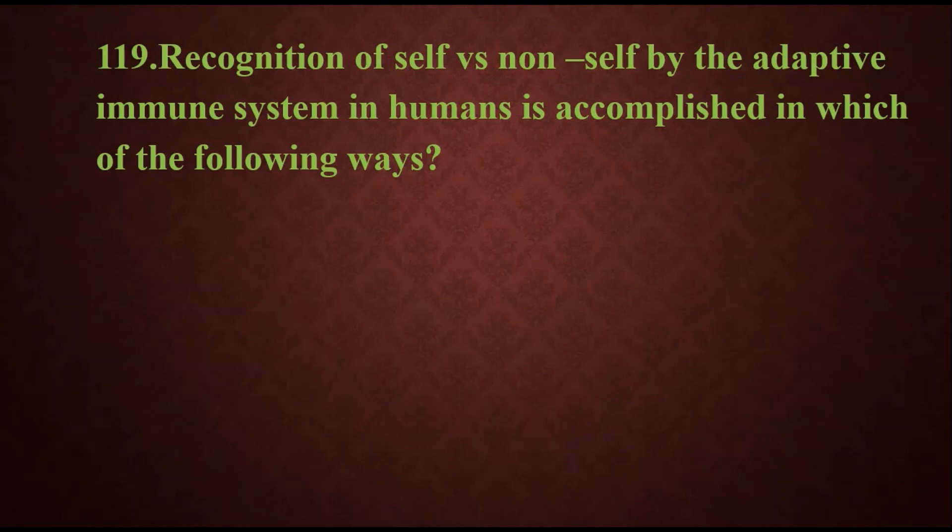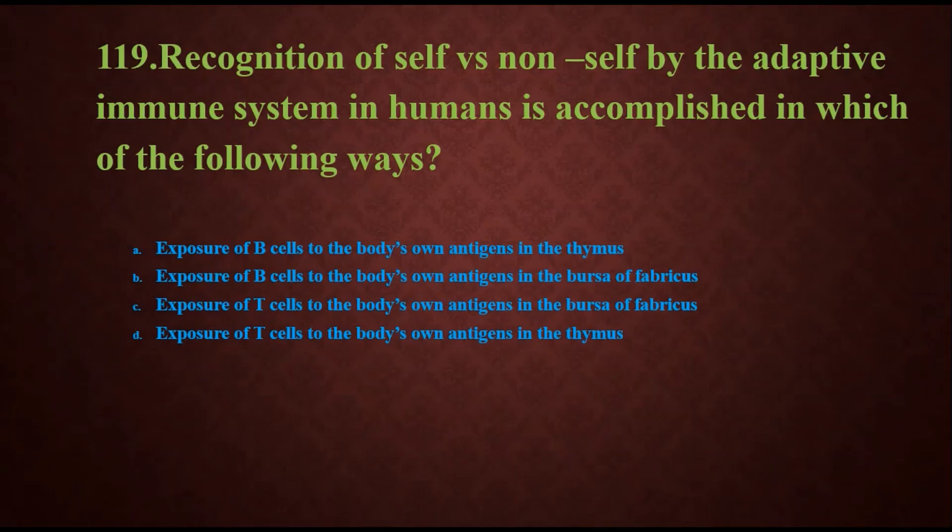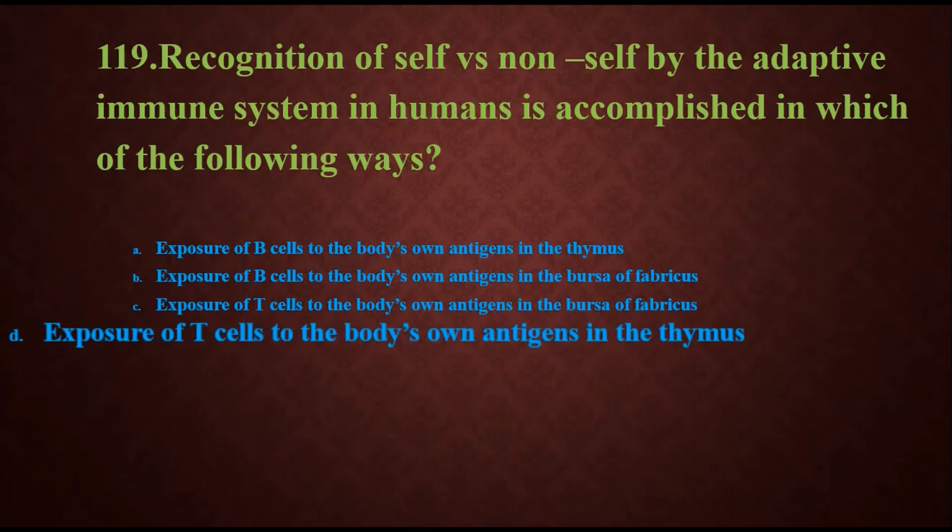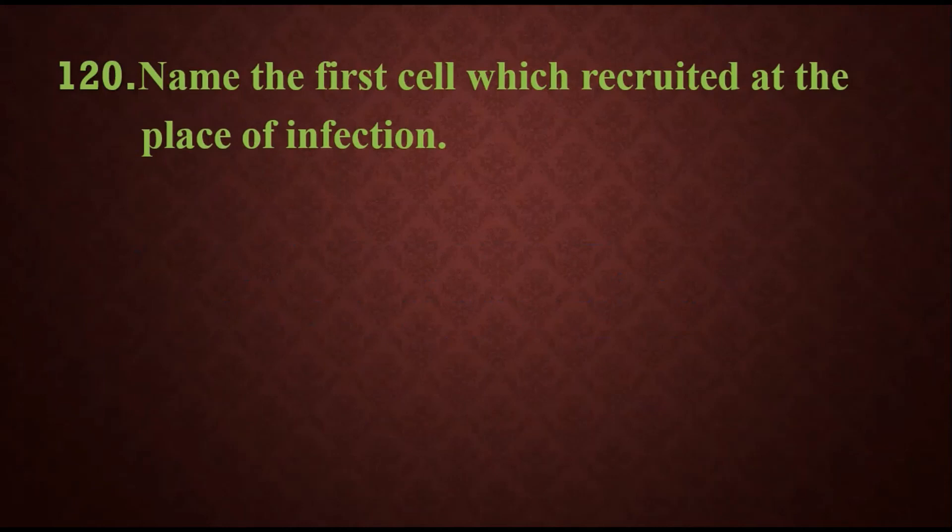Question 119: Recognition of self versus non-self by the adaptive immune system in humans is accomplished in which of the following ways? Options are exposure of B cells to the body's own antigens in the thymus, exposure of B cells to the body's own antigens in the bursa of Fabricius, exposure of T cells to the body's own antigens in the bursa of Fabricius, or exposure of T cells to the body's own antigens in the thymus. The bursa of Fabricius is present only in birds, so options B and C are wrong. The answer is exposure of T cells to the body's own antigens in the thymus.